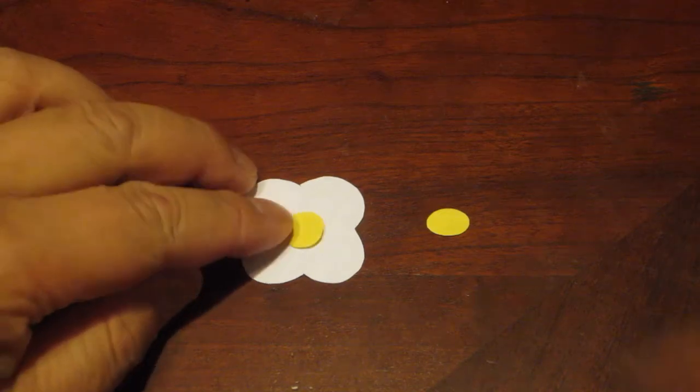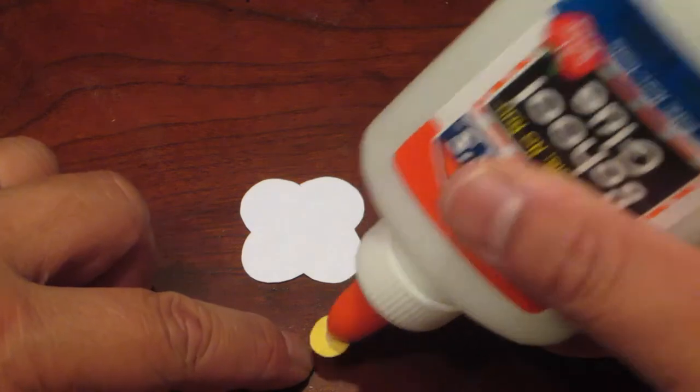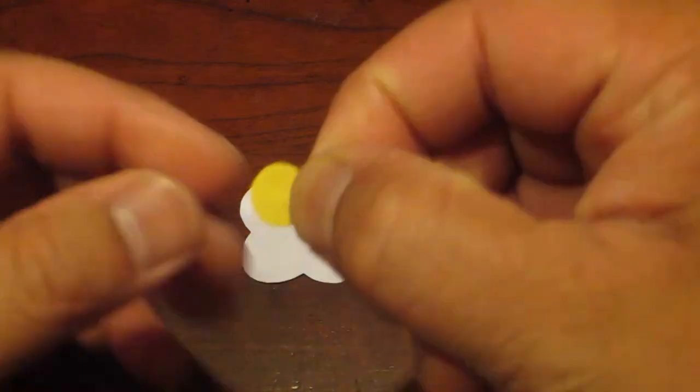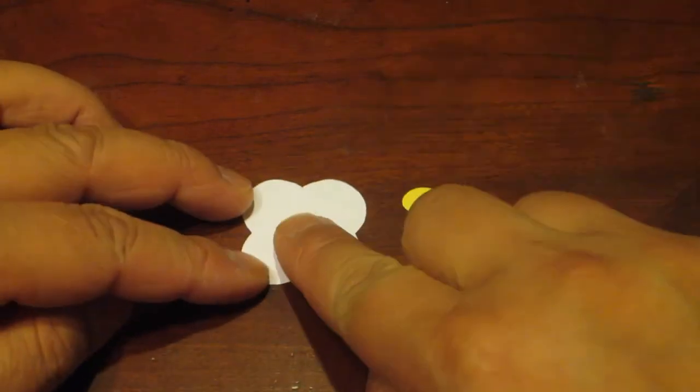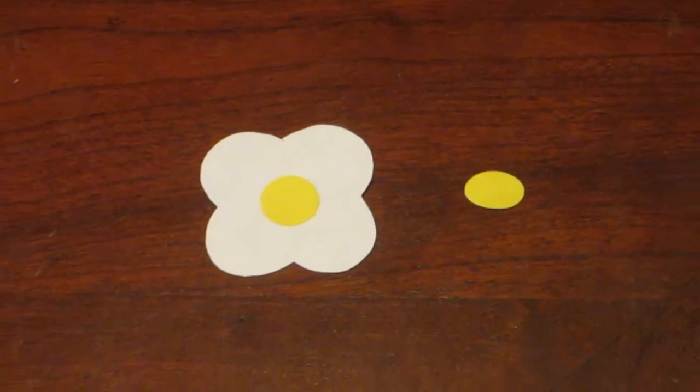Next, glue your yellow center down on the white flower piece. When done, you should have a flower nose.